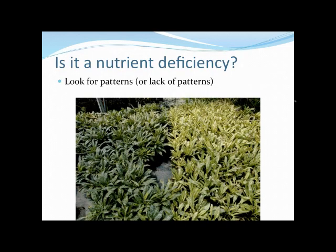Here are some real plants in a greenhouse. At first there doesn't seem to be a pattern, but if I told you there are two different irrigation lines — the lighter colored plants on the right are on one irrigation zone, and the left is on another — then you'd say: there is a pattern. The entire crop is being affected, so this would be an abiotic factor.